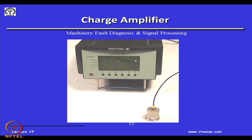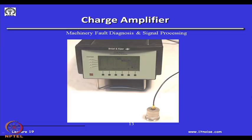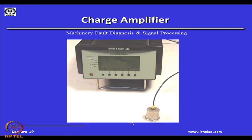A charge-to-voltage amplifier connects to the accelerometer via a special cable that reduces triboelectric noise. Sometimes these cables are more expensive than the accelerometer itself. They have multiple layers of protection — plastic insulation, steel reinforcement over the copper wire, and sometimes a silicone coating for use underwater. There are also underwater accelerometers and hydrophones with special cables that prevent water seeping into the conductor.